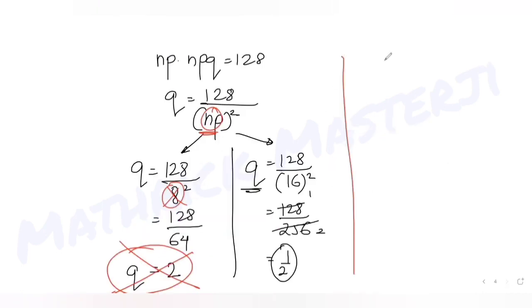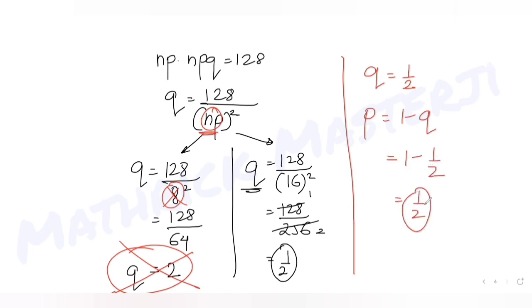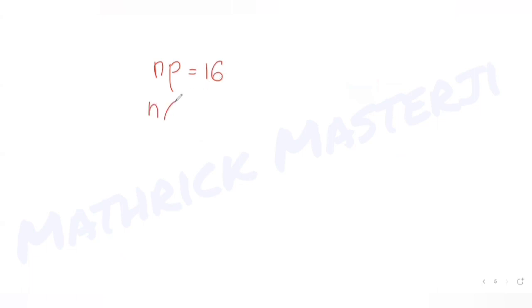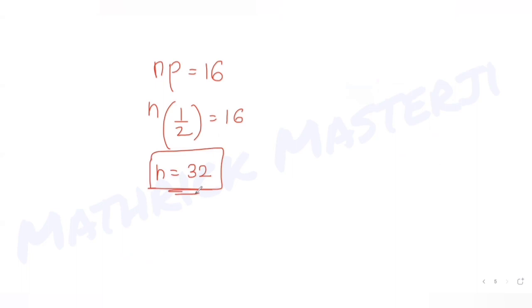With q = 1/2, we find p = 1 − q = 1 − 1/2 = 1/2. Now since np = 16 and p = 1/2, we get n = 32. So the number of trials is 32.